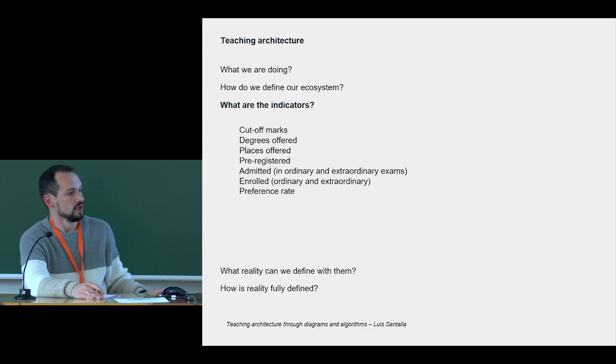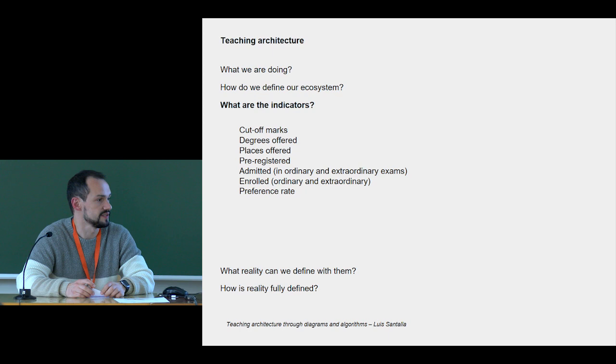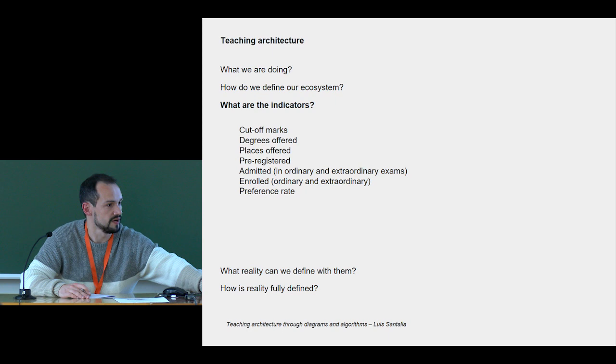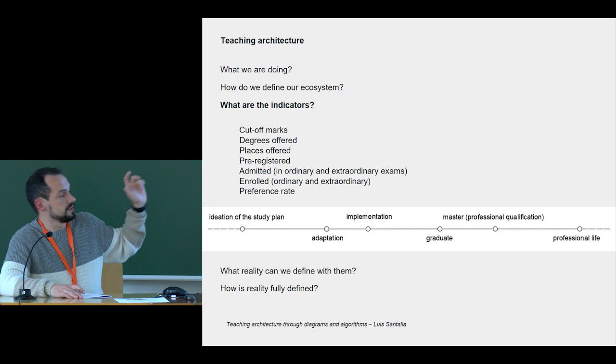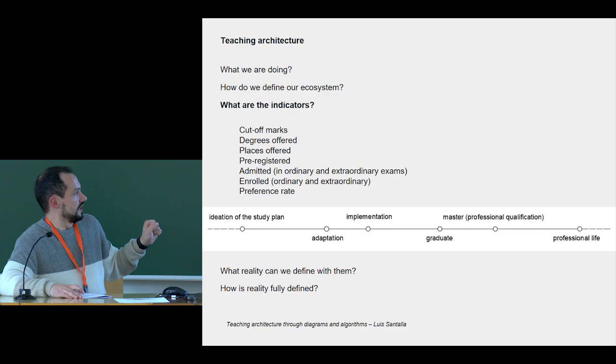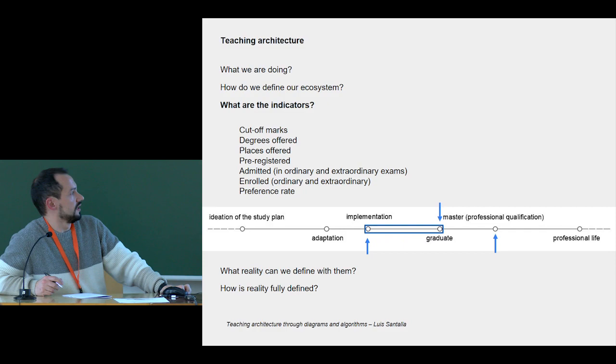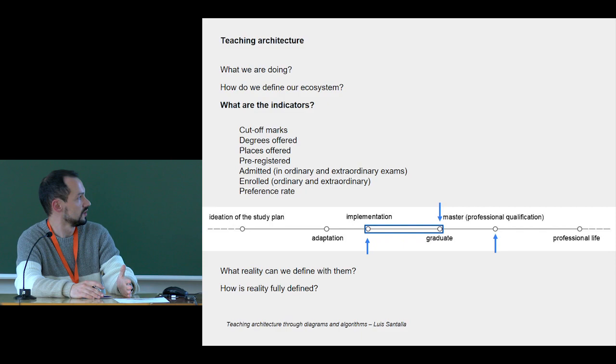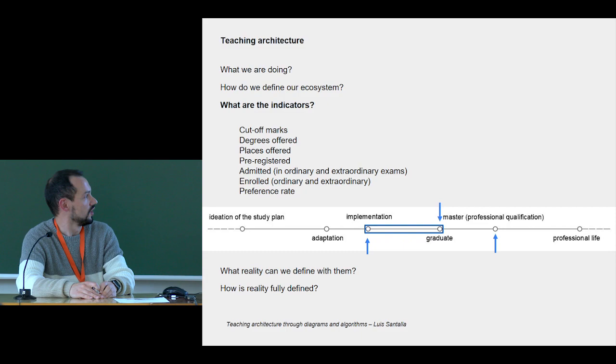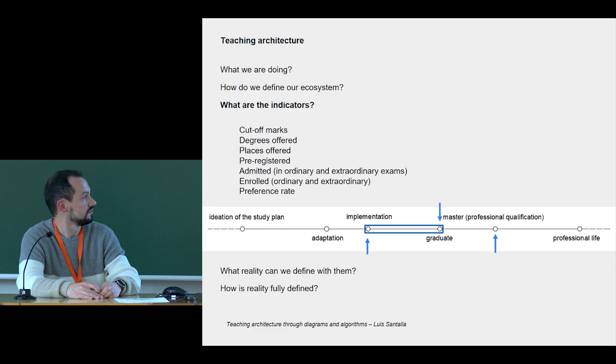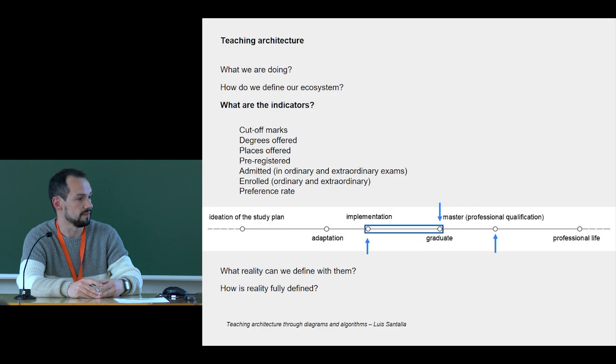So which indicators do we have? We have a cut of marks, degrees offered, places offered, pre-registered numbers. All of them are numbers. If we put a line of how the education is planned, we have at first the ideation of the study plan, the adaptation, the implementation of the plan, and then start the student's part. All of these references are numbers about the process of where the students are, like they were sausages in a production of meat market. We are numbers sometimes. We don't know something about the quality of the students when they leave school, for example. We don't have real indicators about that reality.